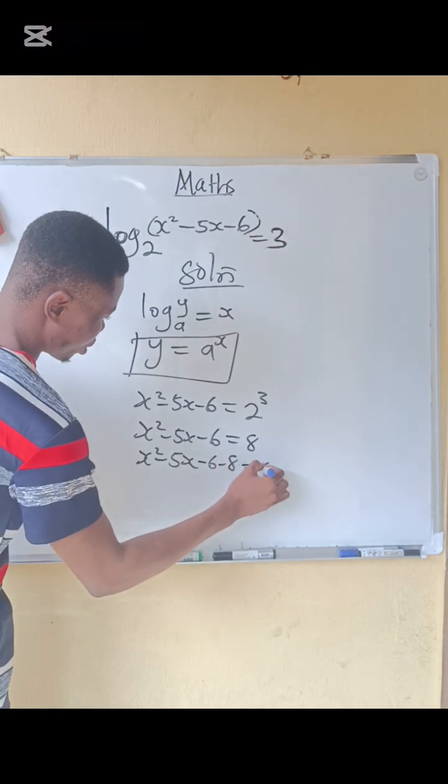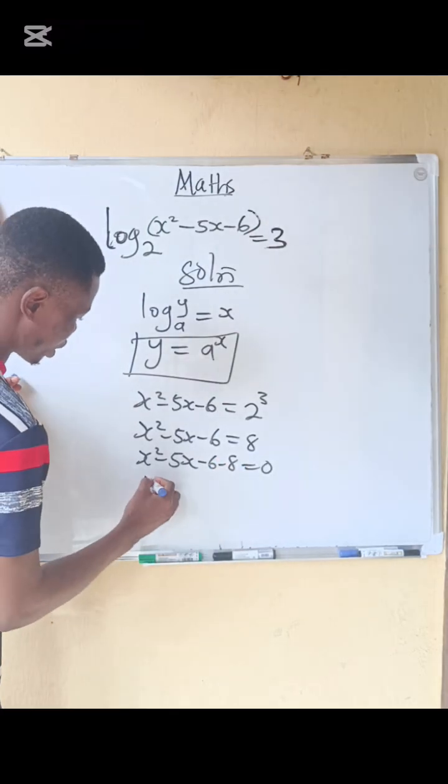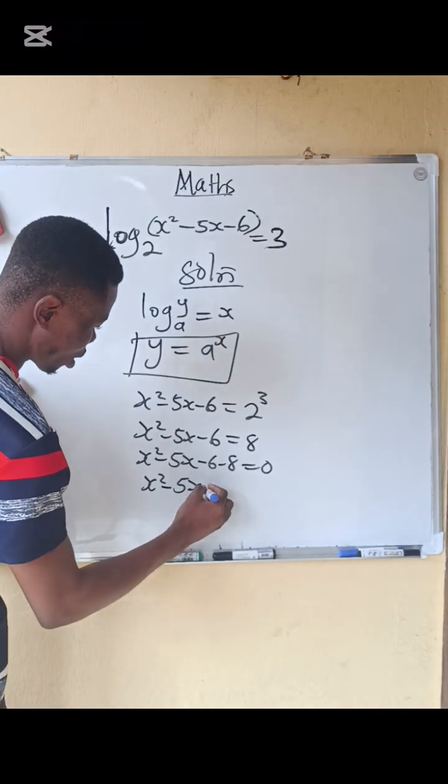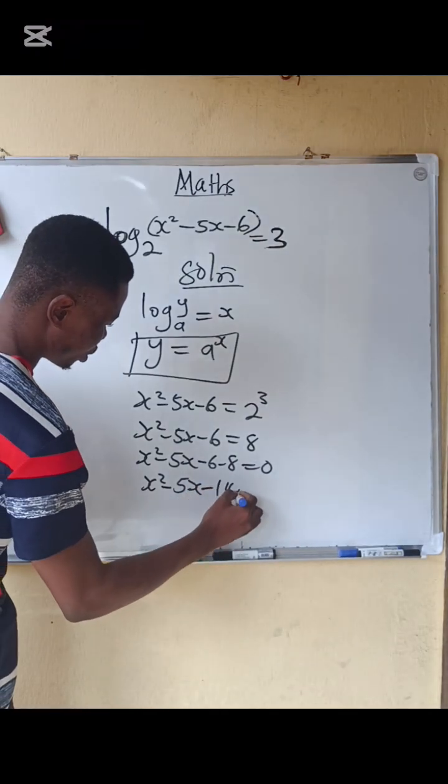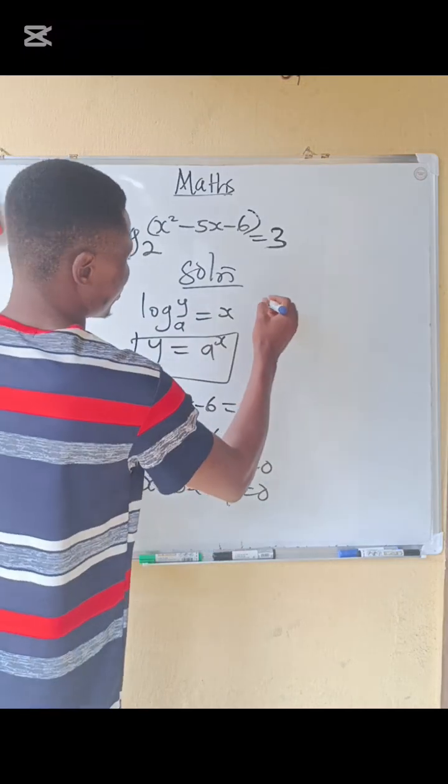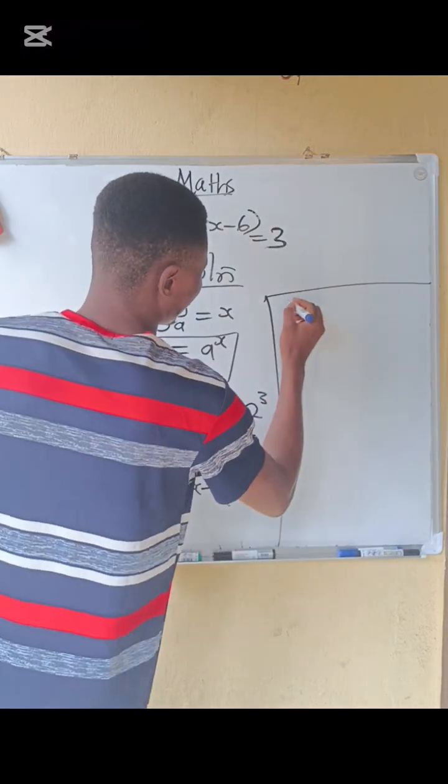So you have x squared minus 5x minus 14 equals 0. What do we do? We factorize. We open bracket, open this, open this equal to 0.